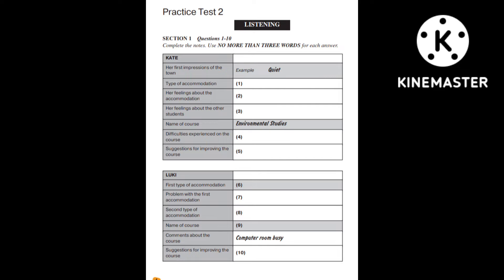Section one. In this section, you will hear two overseas students, Kate and Lukey, being interviewed by a university counsellor. First look at questions one to five. You will see that there is an example which has been done for you. On this occasion only, the conversation relating to the example will be played first.